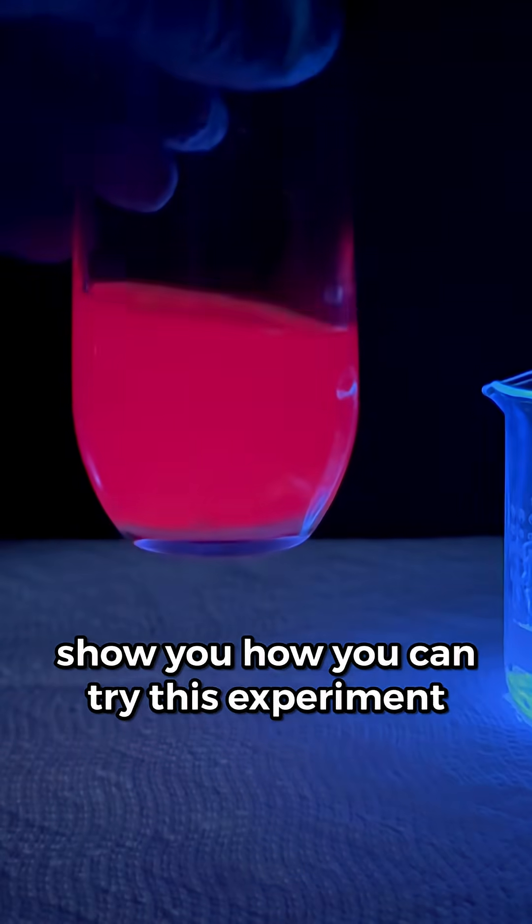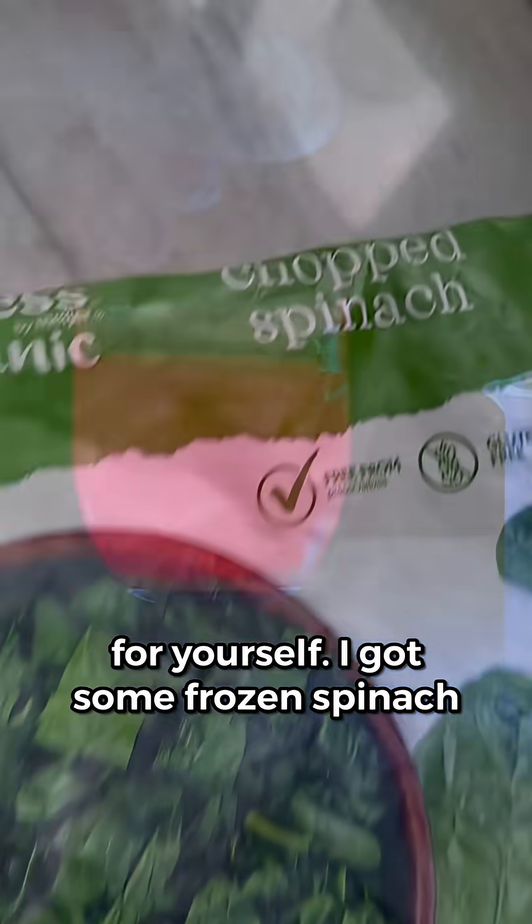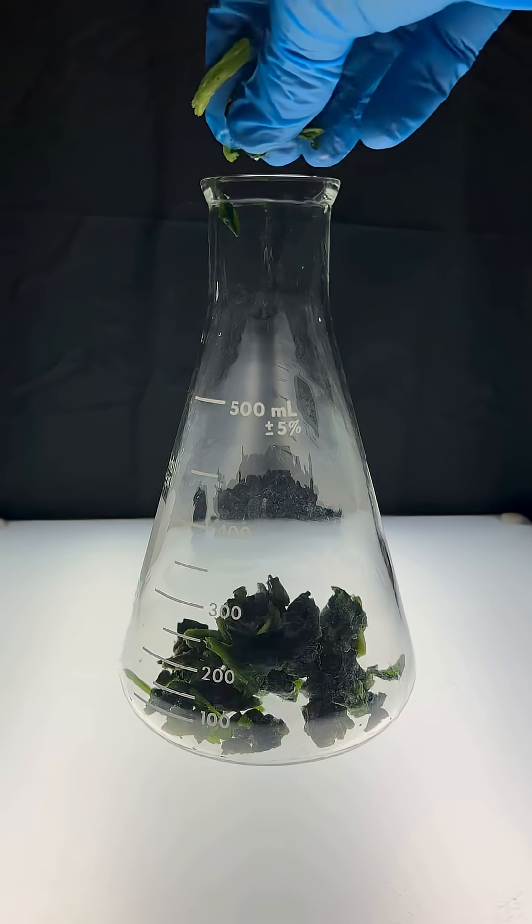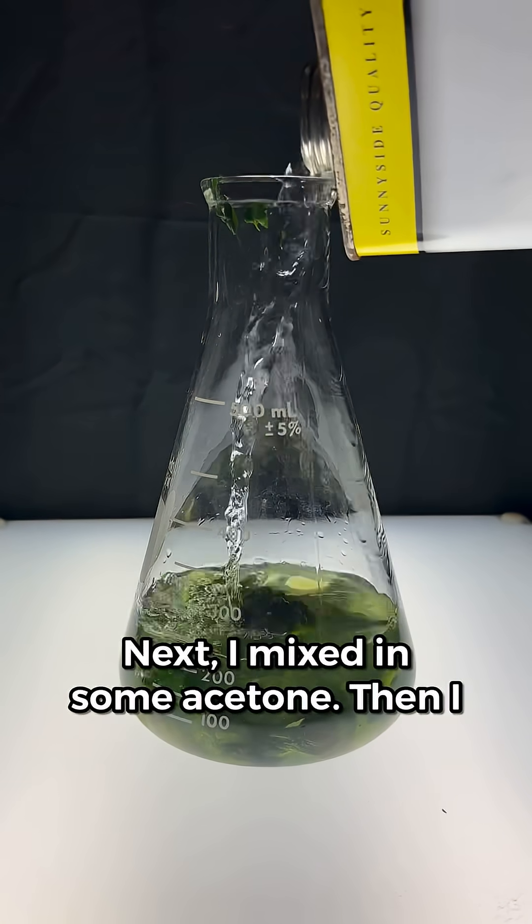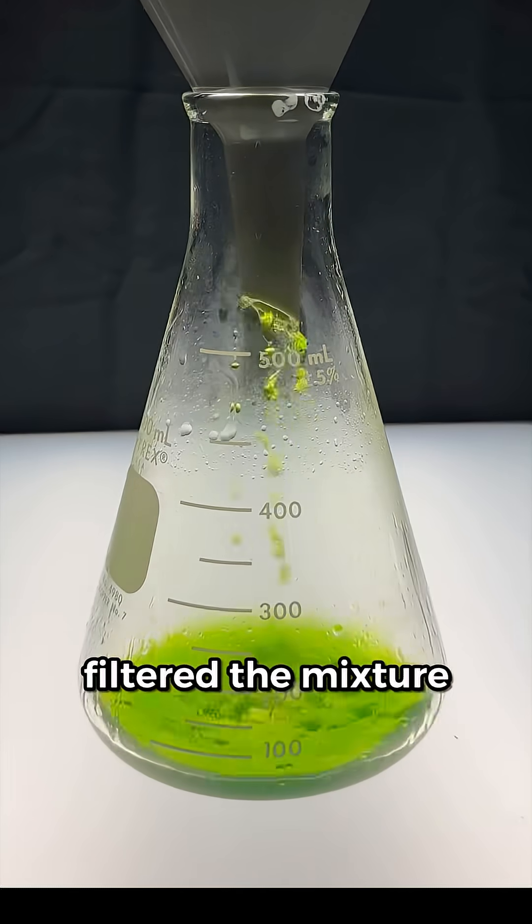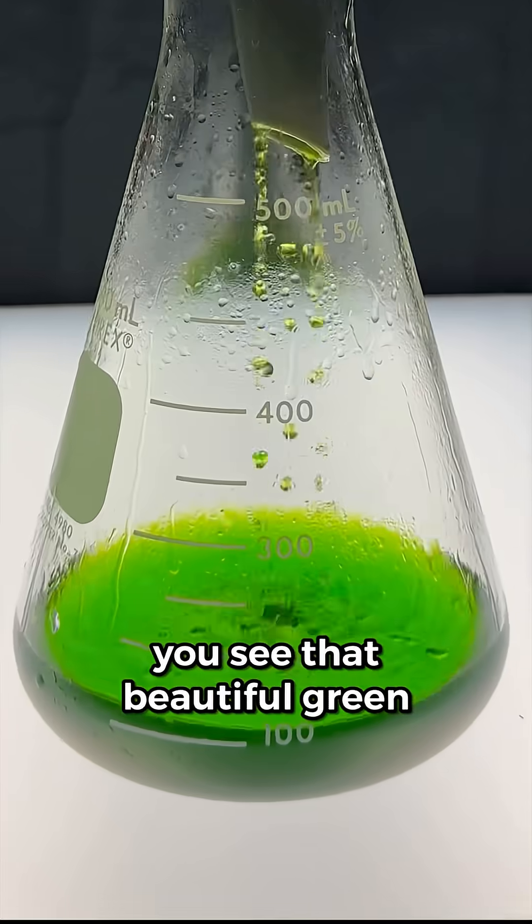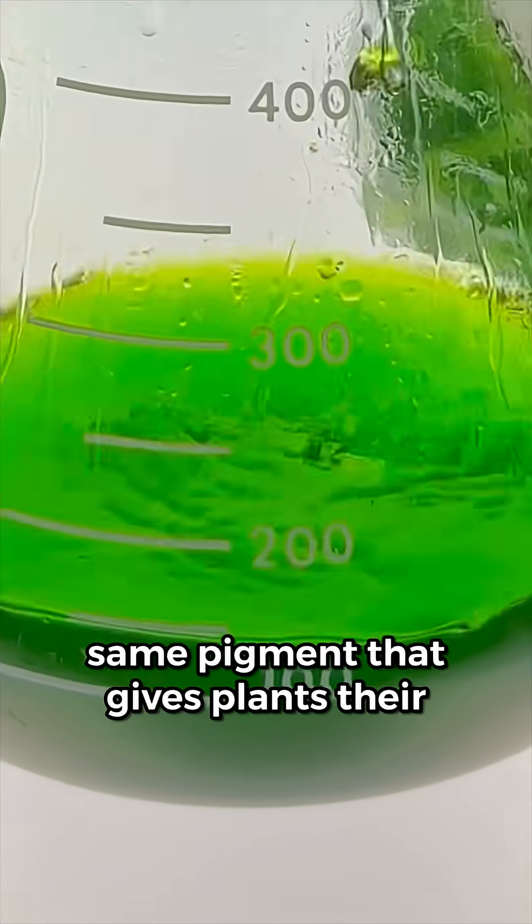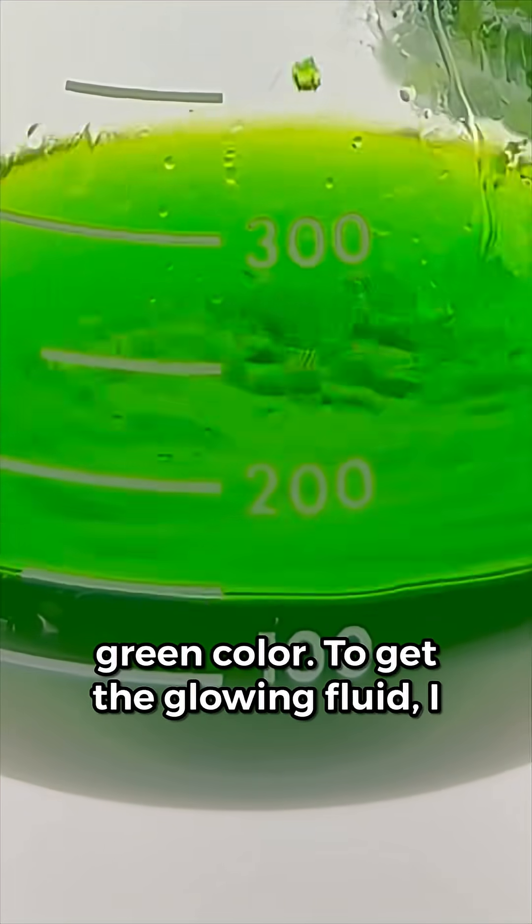First, let me show you how you can try this experiment for yourself. I got some frozen spinach and added it to a flask. Next, I mixed in some acetone. Then I filtered the mixture. You see that beautiful green liquid? It's chlorophyll. It's the same pigment that gives plants their green color.